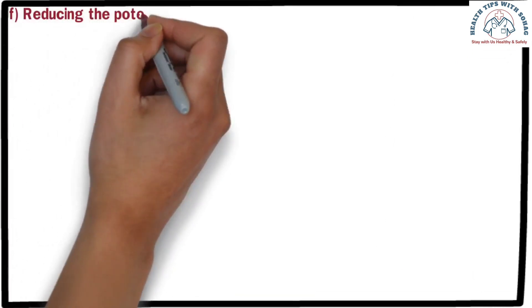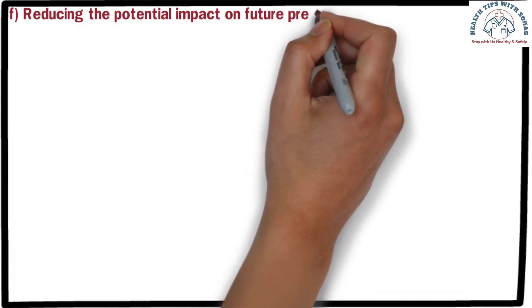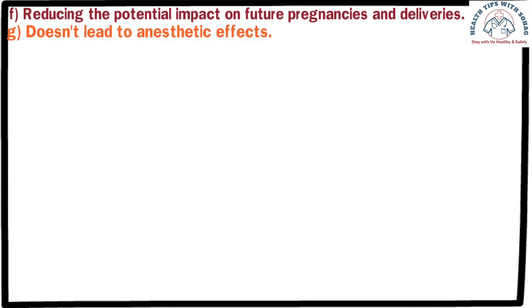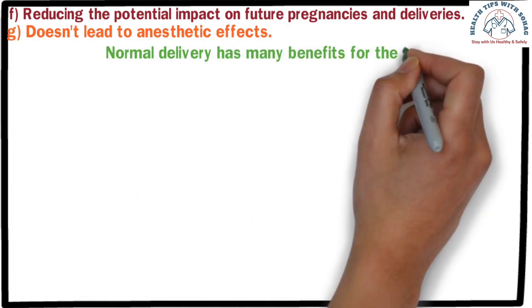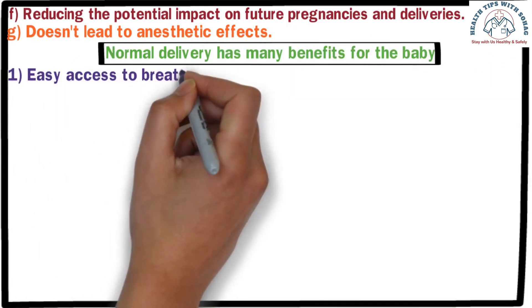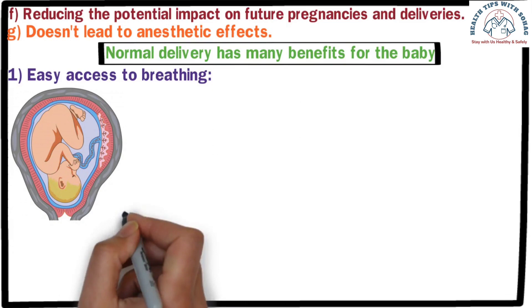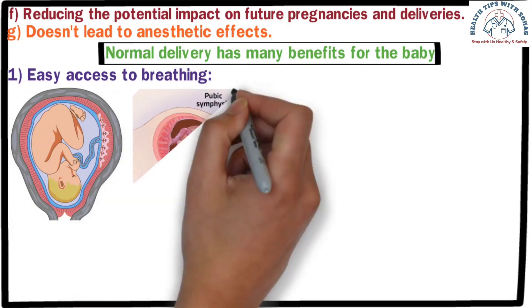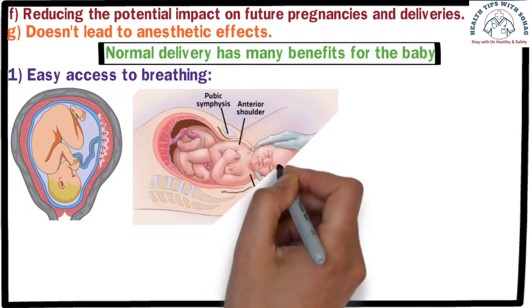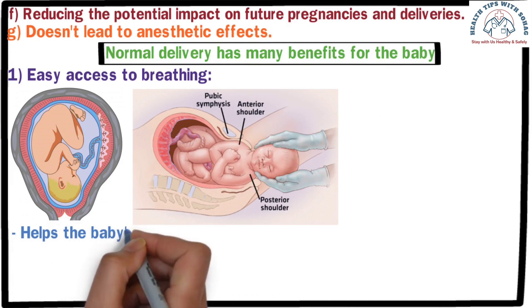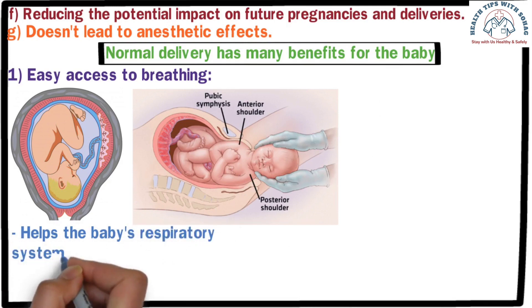Number five: normal delivery does not involve abdominal surgery, reducing the potential impact on future pregnancies and deliveries. Number six: normal delivery does not lead to anesthetic effects. Normal delivery is also beneficial for the baby. Number one: during pregnancy the baby is enclosed in a fluid-filled bag and breathes with its chest. During a normal delivery, the baby comes through the narrow vaginal canal, and the pressure during passage helps expel fluid from the baby's lungs.